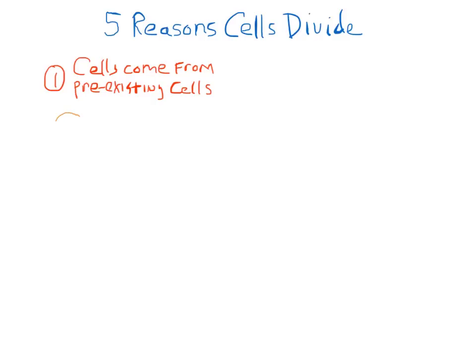So if this was a cell with the cell membrane and the nucleus, in order to make new cells, it would need to divide and create two new daughter cells.